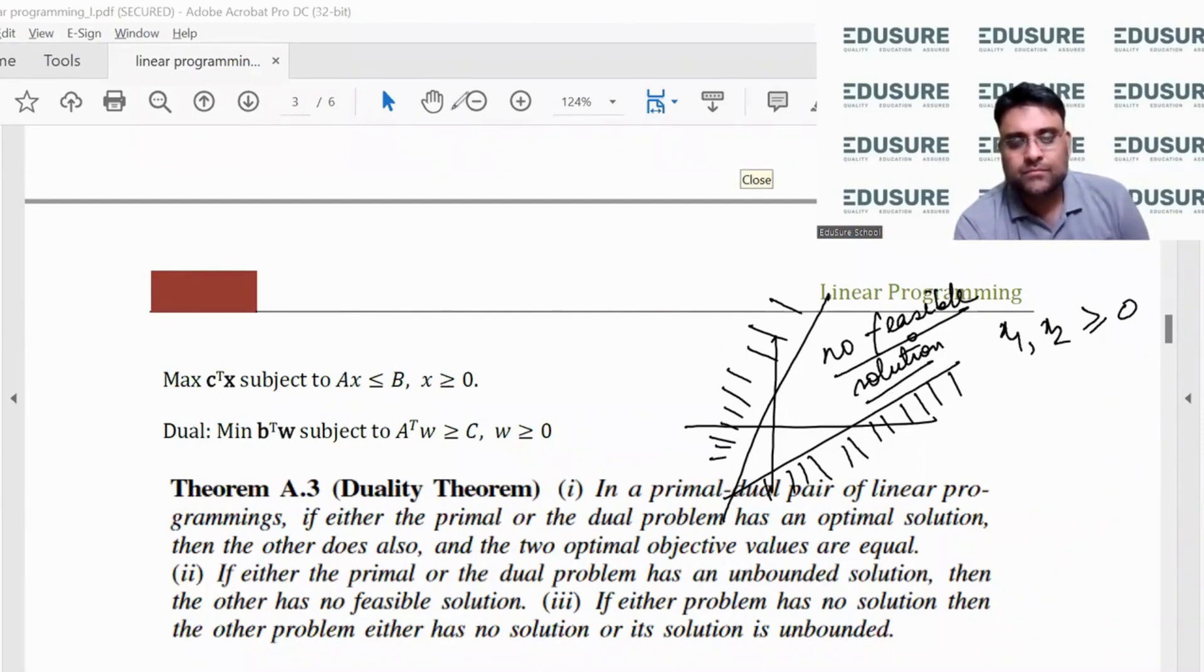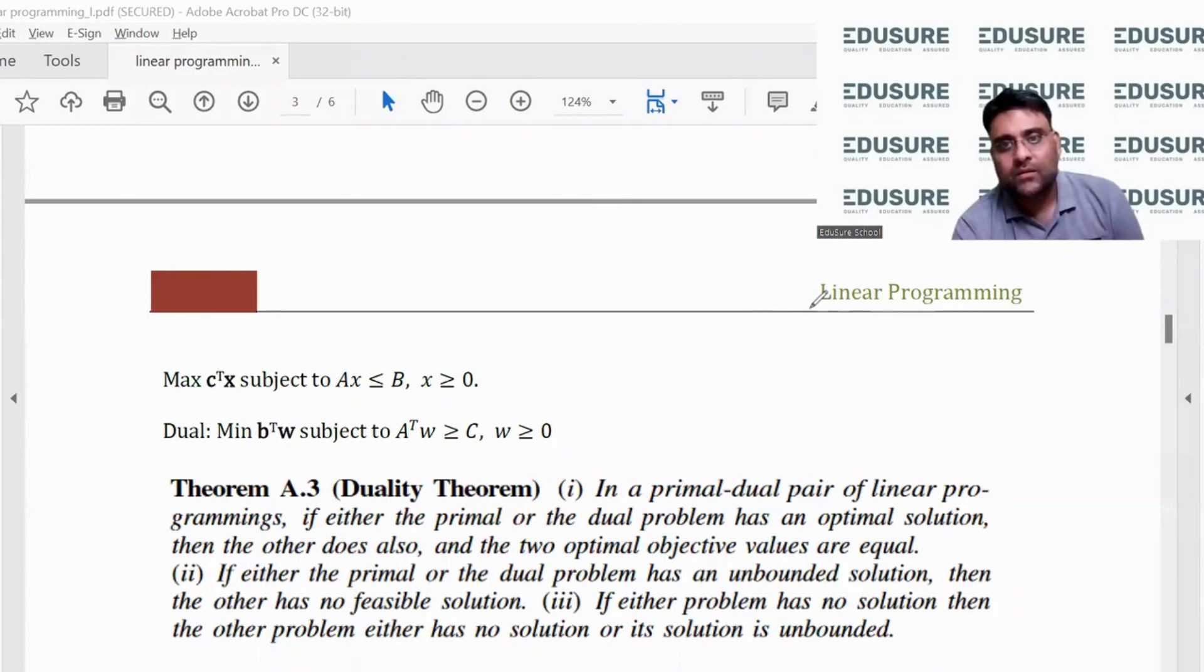If the primal has no solution, then the other problem either has no solution or the solution is unbounded. If the primal or the dual has unbounded, then the other has no feasible. So if one of them has unbounded - what is unbounded?